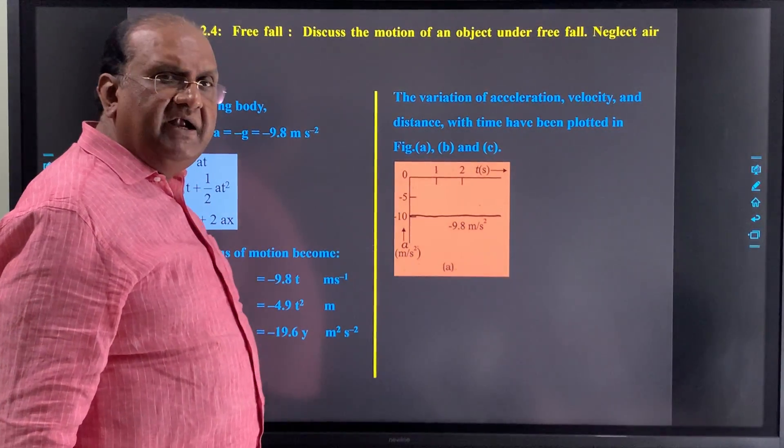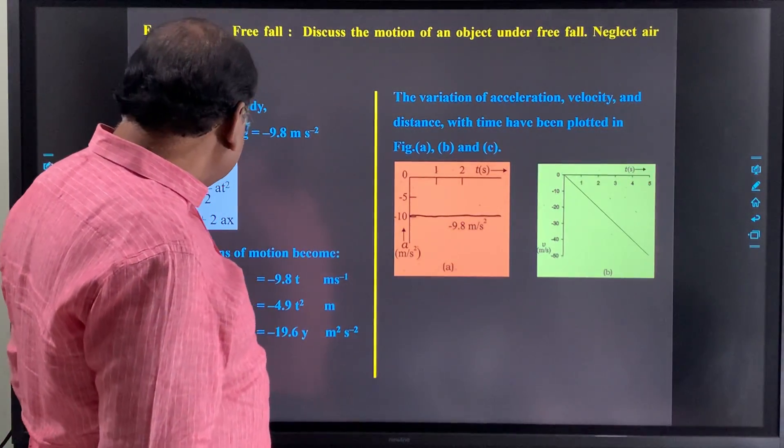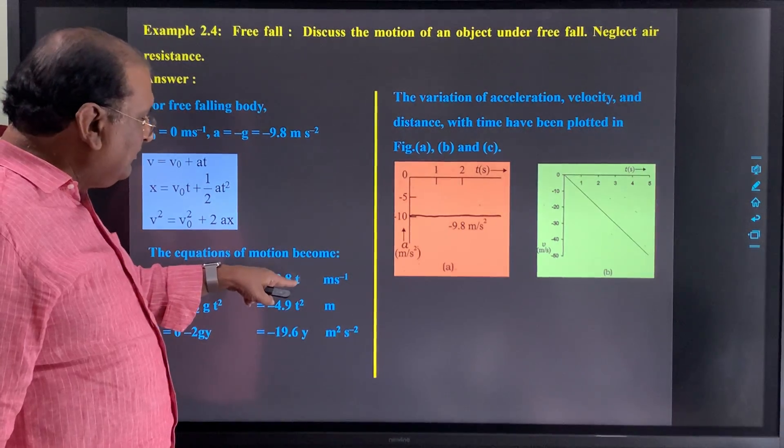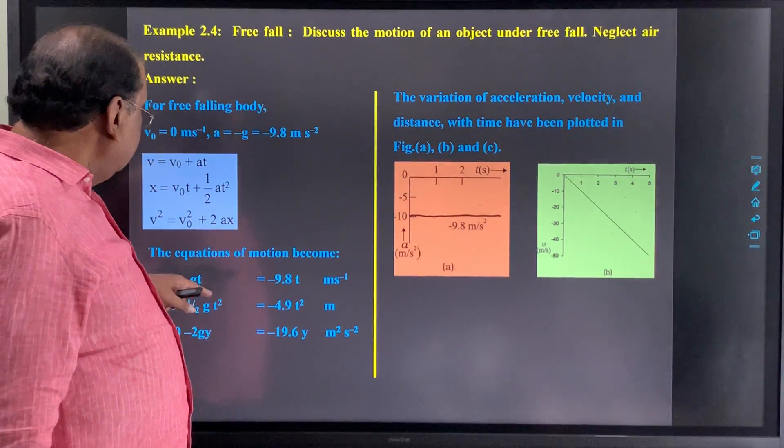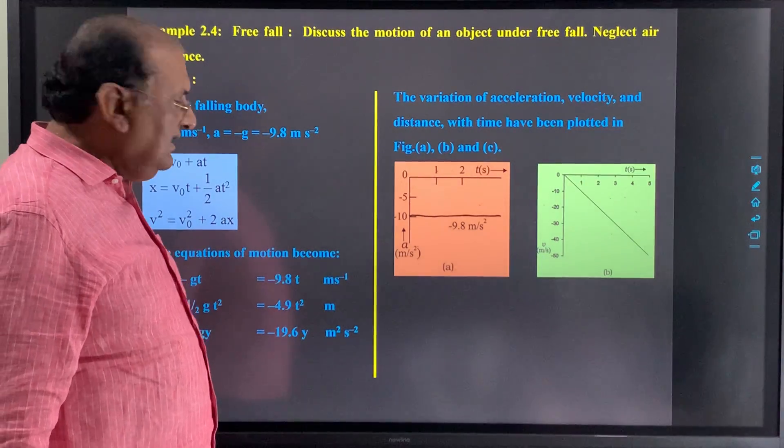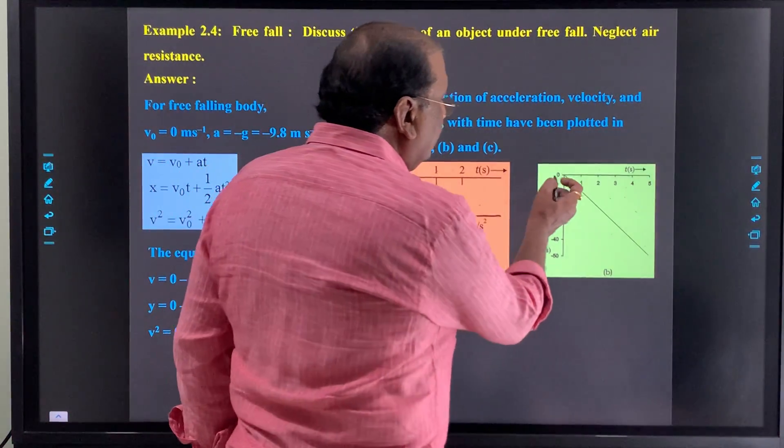Then see velocity. So v equal to minus 9.8t, so v directly proportional to time, but with a negative sign. So the graph is in the fourth quadrant.